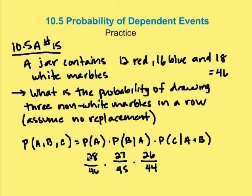So the probability of A, B, and C is going to be 28/46 times 27/45 times 26/44.